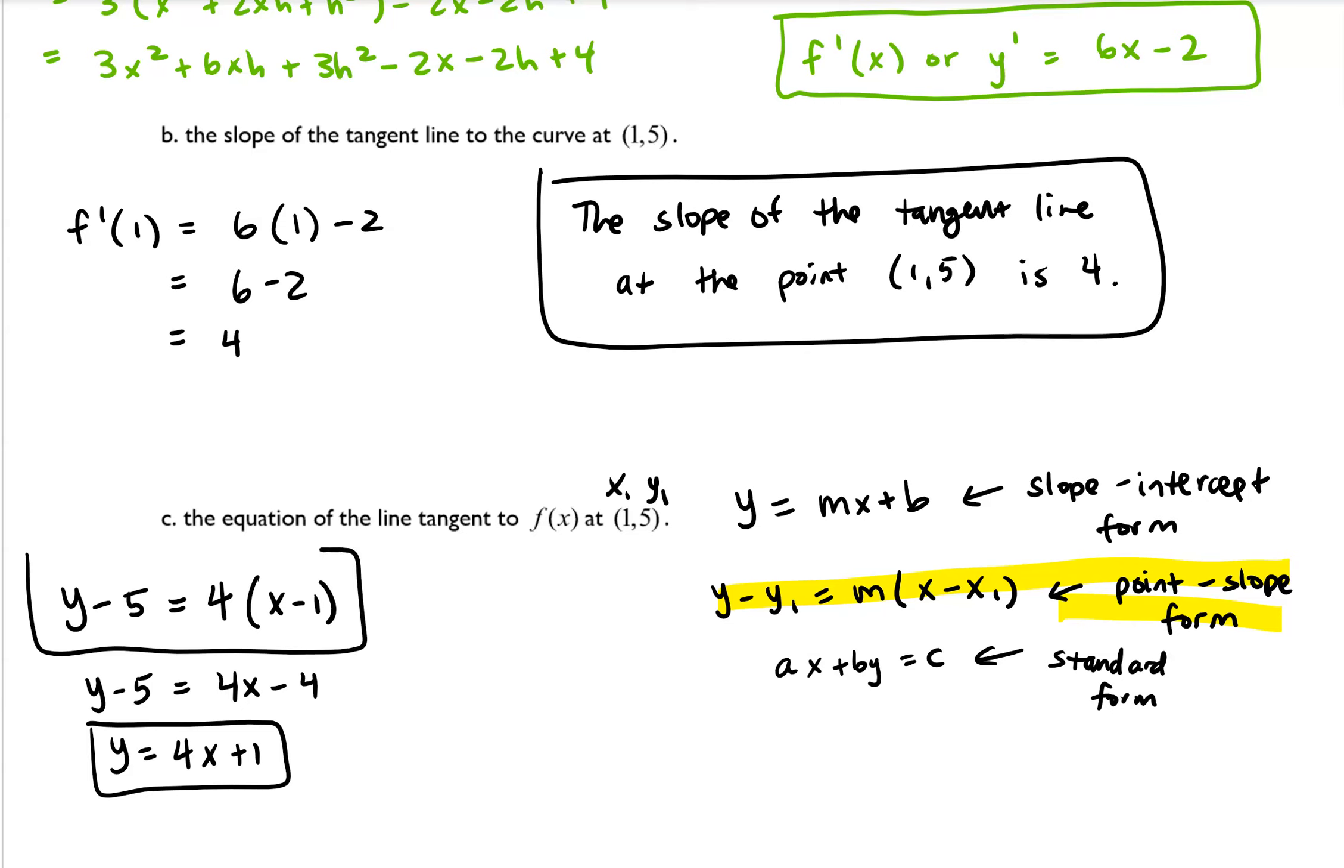So you can leave your answer in either of these. So again, this is point slope form. And this one is called slope-intercept form. And both are acceptable. I'm happy with either one.